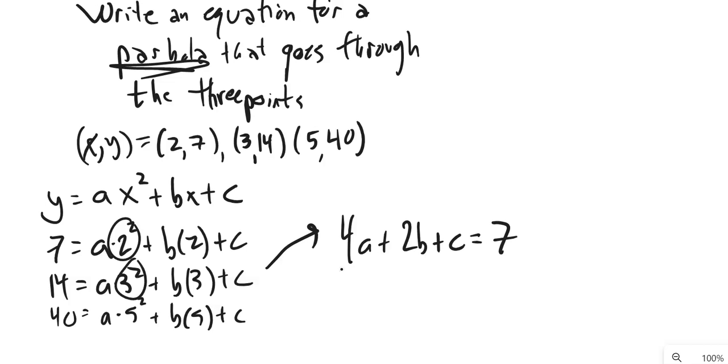So, this is 4a plus 2b plus c equals 7. 3 squared is 9. So, this is 9a plus 3b plus c is 14. And you can see the system starts to take shape.